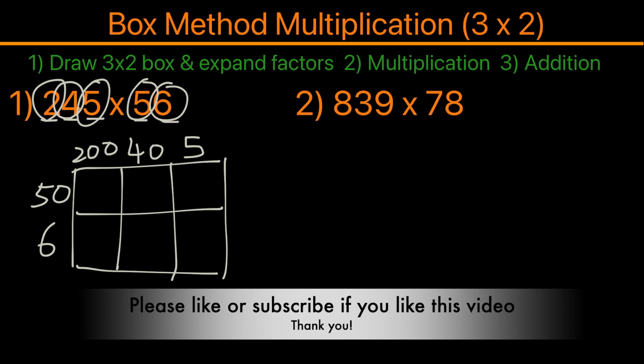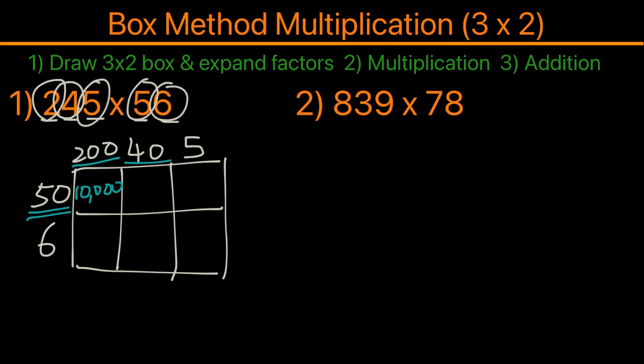Now the next step will be taking the numbers and multiplying them together. So we will take 200 times 50 and that equals 10,000. Next we'll take 40 times 50, and 40 times 50 equals 2,000. Then we have 5 times 50, and that equals 250.